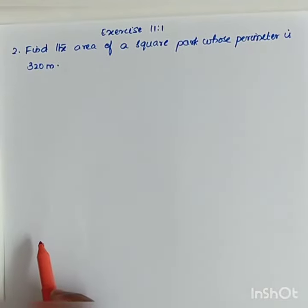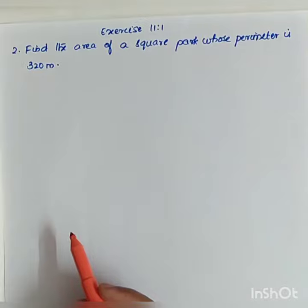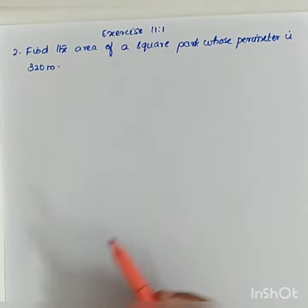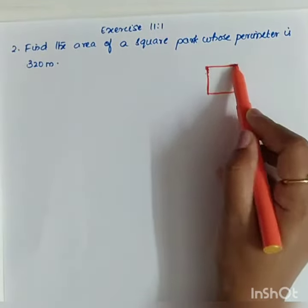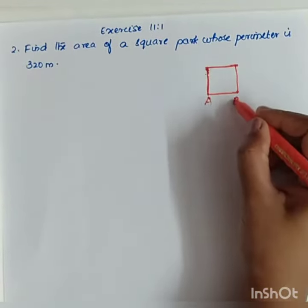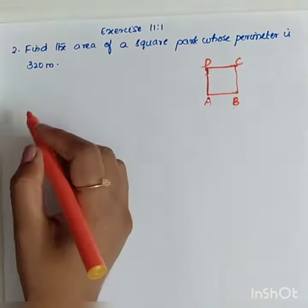Next, let's see the next question. Exercise 11.1, question 2: Find the area of a square park whose perimeter is 320 meters. If this is the square park ABCD, what